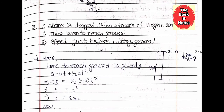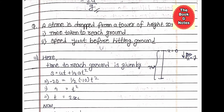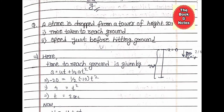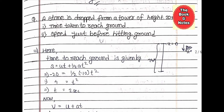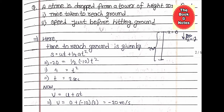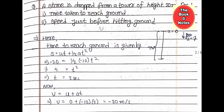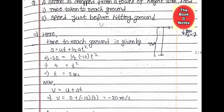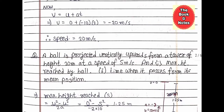The second question: a stone is dropped from a tower of height 20 meters. Find (1) time taken to reach the ground and (2) speed just before hitting the ground. You must try to solve it yourself, or pause the video and watch the answer. The answer is 20 meters per second.